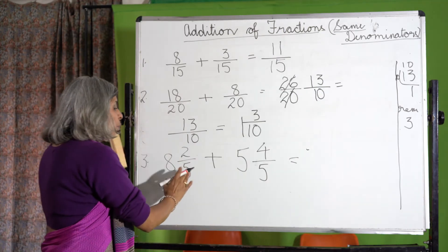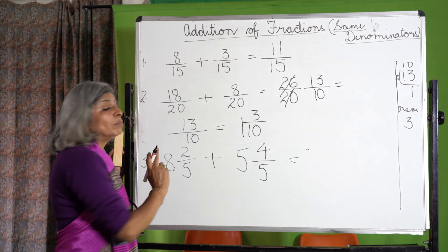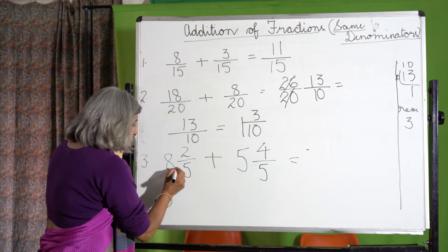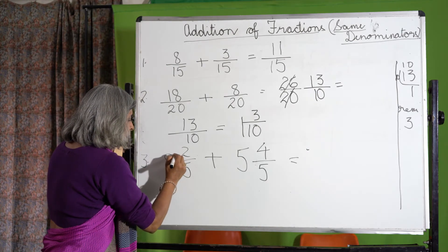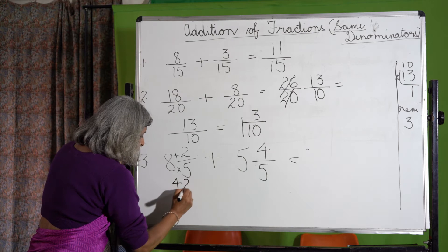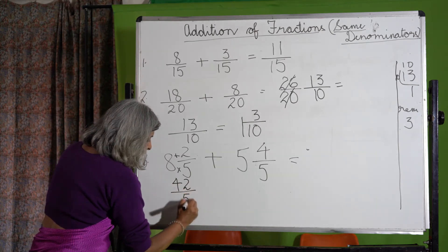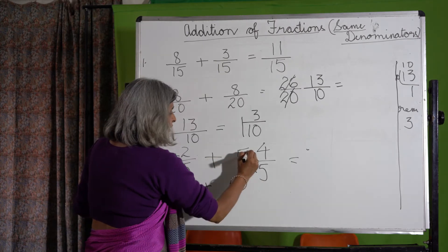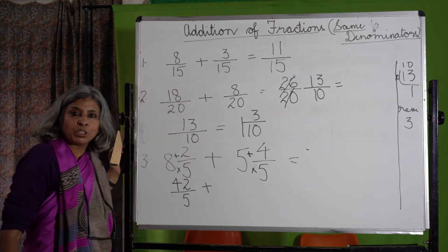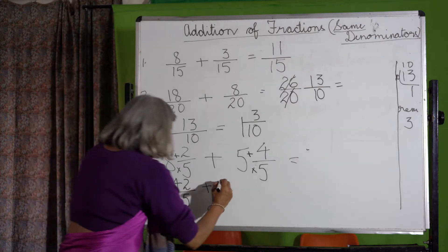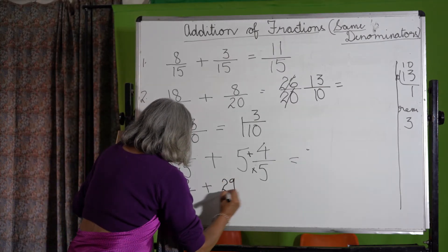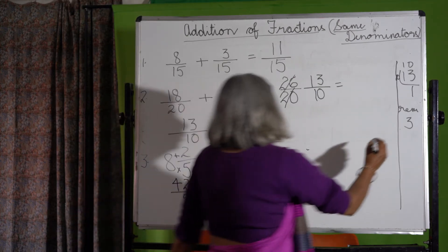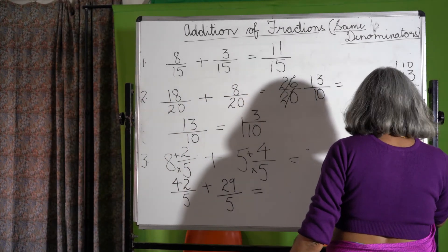So 8 and 2 upon 5: 8 fives are 40, plus 2 is 42 upon 5. Plus 5 and 4 upon 5: 5 fives are 25, plus 4 is 29 upon 5. Now we add 42 and 29 — you have a rough column, you can do it there.